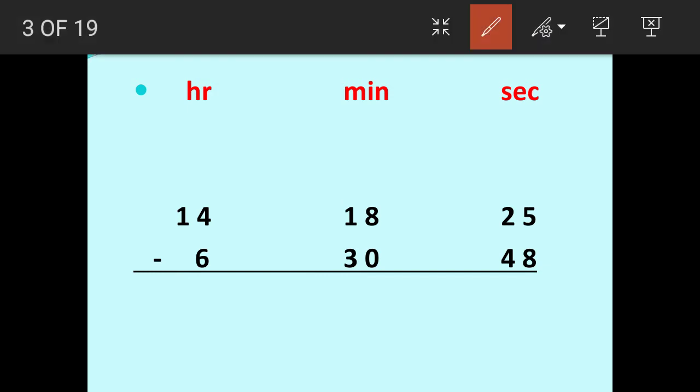So first of all we have to subtract 48 seconds from 25. Now here 48 is bigger than 25 so we need to go to 18 to borrow. Now 18 minutes will give 1 minute to this 25 and it becomes 17. Now when that minute comes here to 25, that becomes 60 because 1 minute has 60 seconds in it.